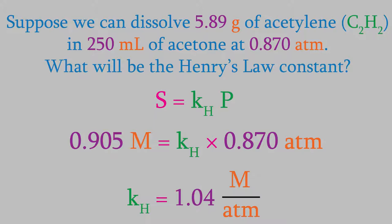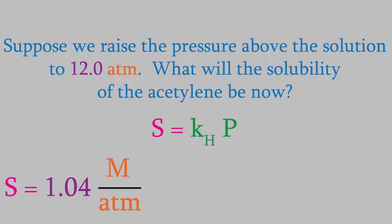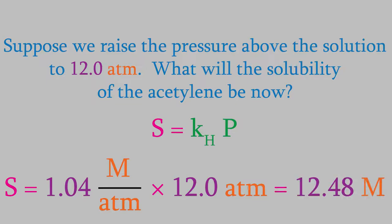Now that we know the Henry's Law constant, we can use it to predict the solubility of acetylene in acetone for any pressure. For example, suppose we raise the pressure of acetylene above the solution to 12.0 atm. What will be the solubility of the acetylene now? We'll use Henry's Law again: S = KH × P = 1.04 M/atm × 12.0 atm, and we find that the new solubility is 12.48 M.